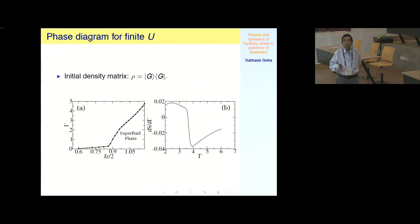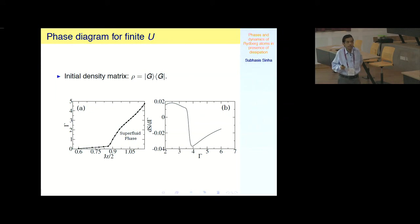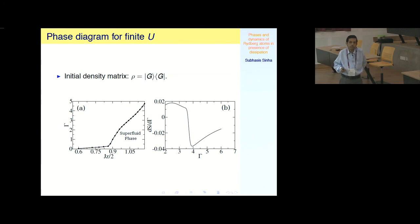For finite U (soft-core bosons), we perform numerical calculations starting from the Gutzwiller wave function to construct the density matrix, obtain the steady state, and find the phase diagram. The result similarly shows that large dissipation destroys superfluidity, and a jump appears in the entropy derivative.